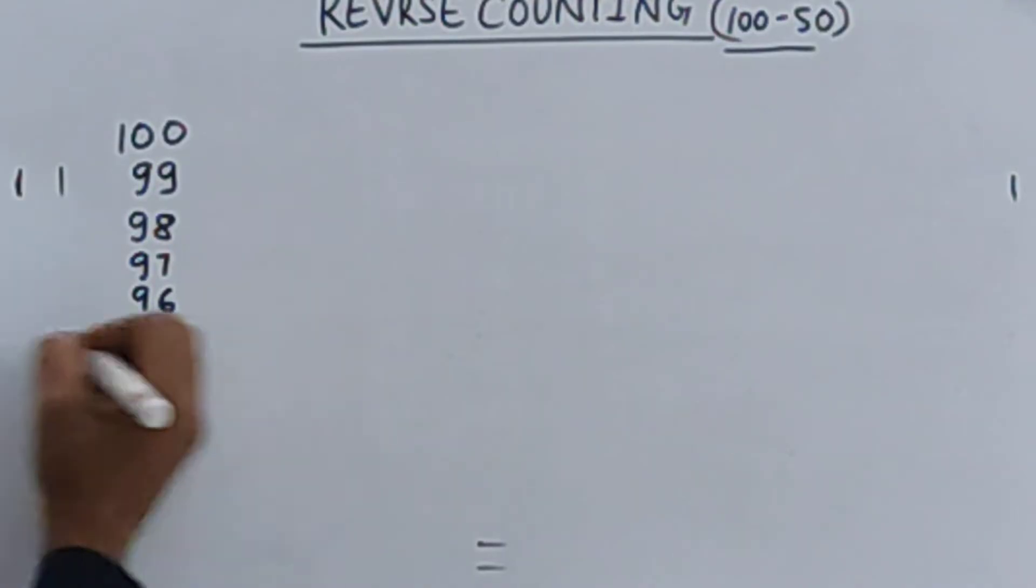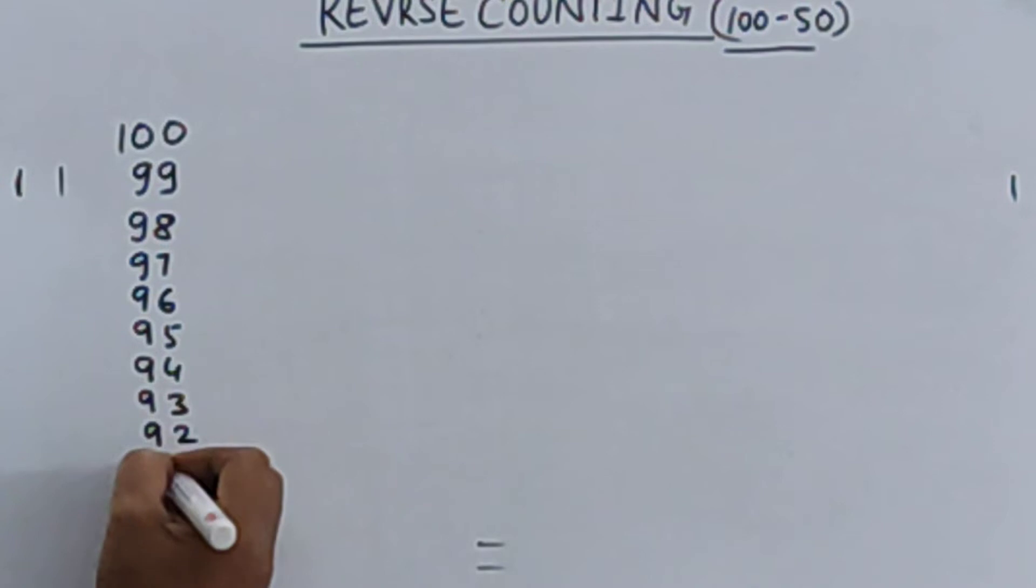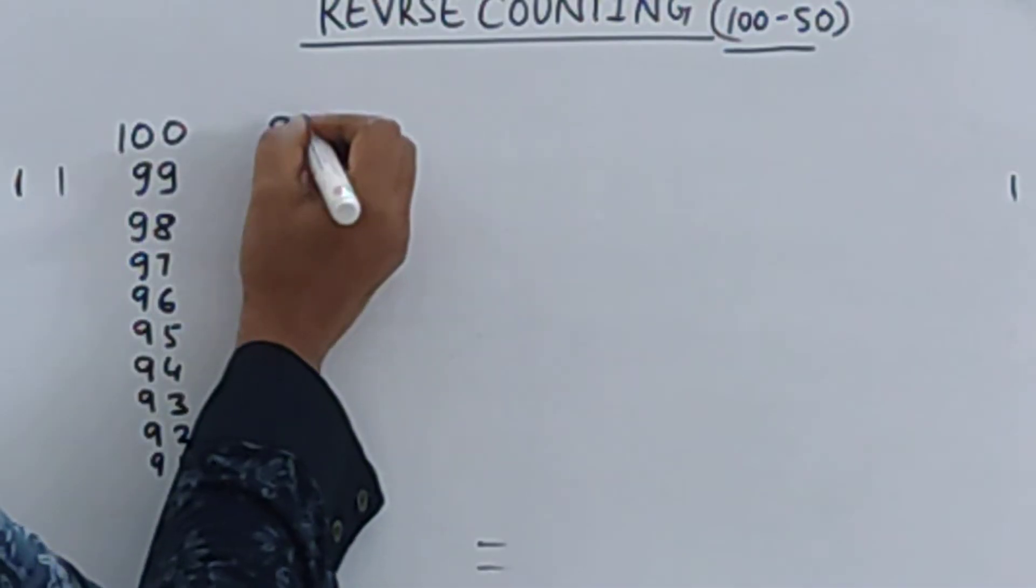95, 94, 93, 92, and 91. Before 91 what comes? 90.